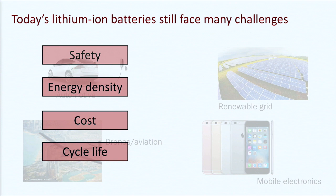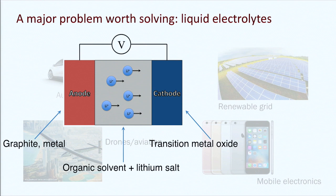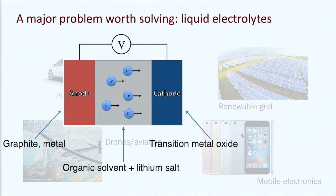One difficulty at the heart of many of these challenges is the liquid electrolytes used in commercialized cells. Looking at a schematic of a battery, we have the anode and the cathode — typically graphite or potentially lithium metal on the anode side and transition metal oxide on the cathode — and then an organic solvent between the two that mediates the transport of lithium back and forth as you charge and discharge.